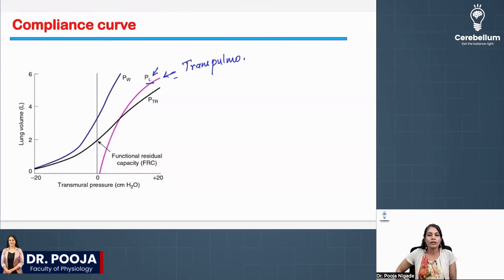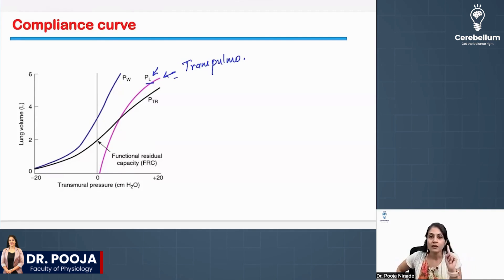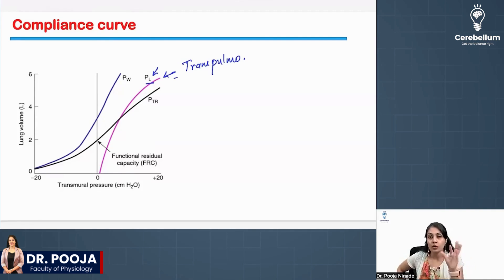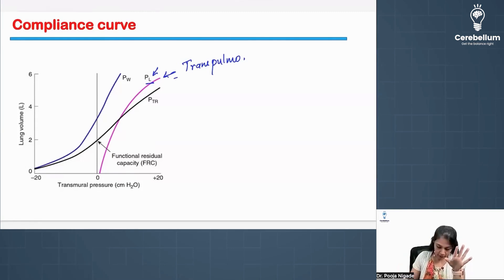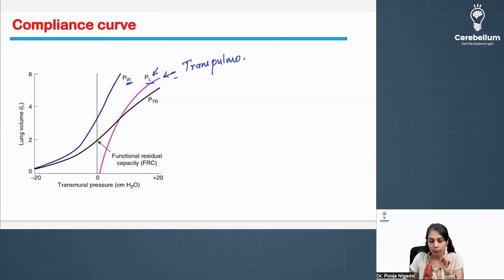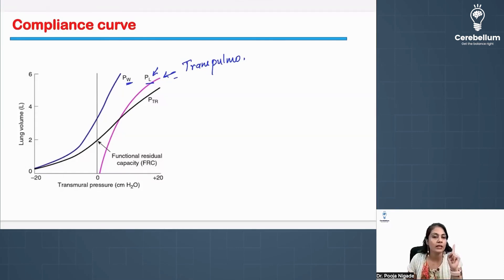The second pressure we talked about is the transthoracic pressure — the transmural pressure across the chest wall. So W is coming for that wall; W is the wall. This is the diagram which is given in the genome.